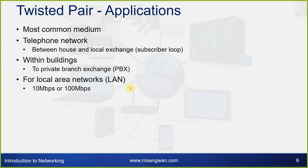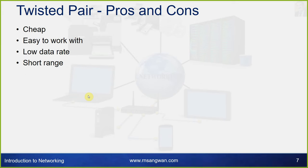Twisted pair cable and its applications: it is the most common medium, used in telephone networks between the house and local exchange — called the subscriber loop — within buildings to a private branch exchange (PBX), and for local area networks at 10 Mbps to 200 Mbps. It is cheap and easy to work with, but has a low data range and is suitable only for short range.